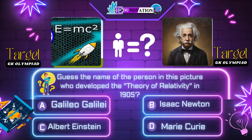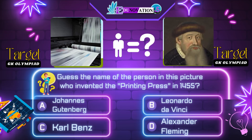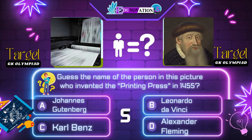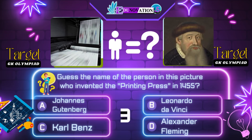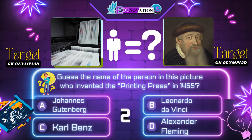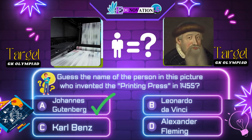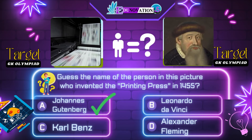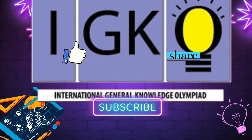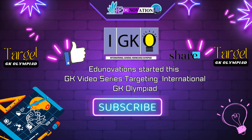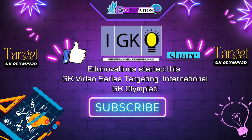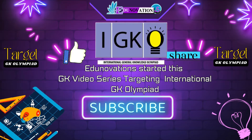Now next question. Guess the name of the person in this picture who invented the printing press in 1455. Your options are: A. Johannes Gutenberg, B. Leonardo da Vinci, C. Carl Benz, D. Alexander Fleming. Time's up. Correct answer is A. Johannes Gutenberg.